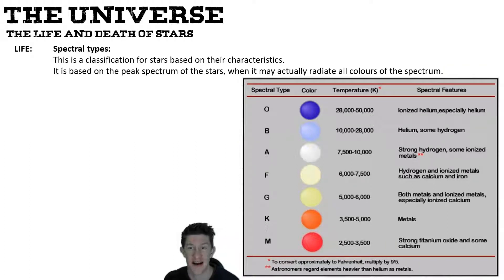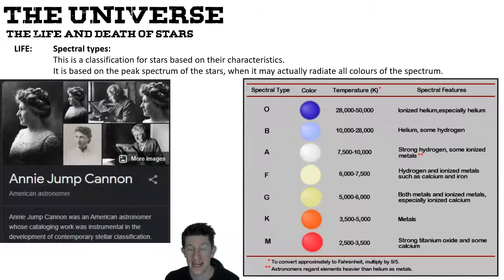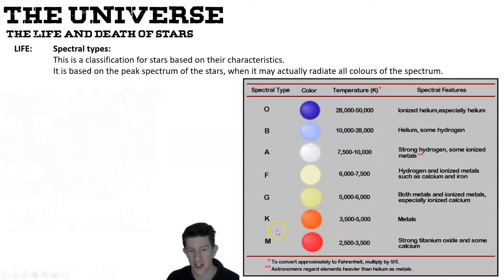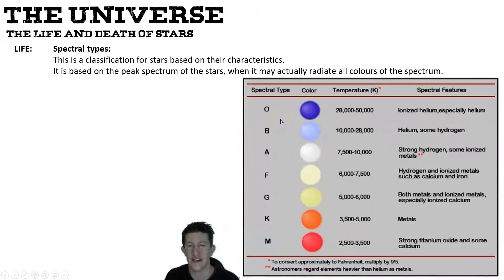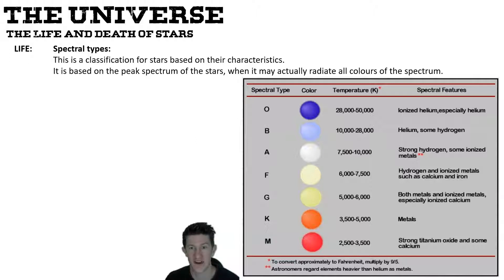Spectral types are a classification for stars based on their characteristics. A very famous woman named Annie Jump Cannon — a deaf lady who worked with a team of female astronomers — developed the OBAFGKM scale, a letter-based spectral classification representing colour-temperature ranges. She examined hundreds of low-resolution pictures of stars and ended up categorizing thousands of stars into this stellar classification — a really impressive feat.